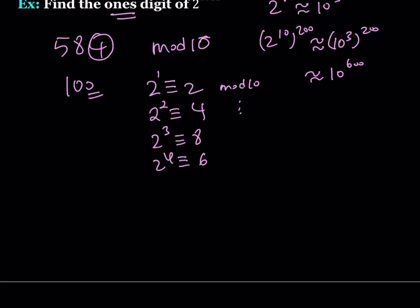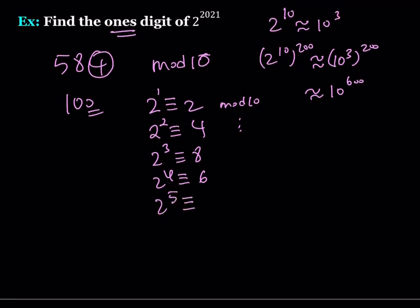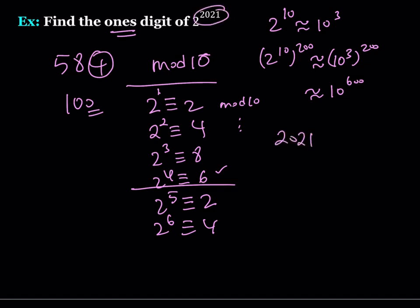Continuing the pattern: 2 to the 5th is 32, or multiply 6 by 2 to get 12, which is 2 mod 10. The pattern starts repeating — we have a cycle of 4. Therefore, we need to figure out where 2021 falls. The exponents correspond to mod 4: 2021 leaves a remainder of 1 when divided by 4, so 2021 is congruent to 1 mod 4. Therefore 2 to the 2021st is congruent to 2 mod 10, meaning the ones digit is 2.